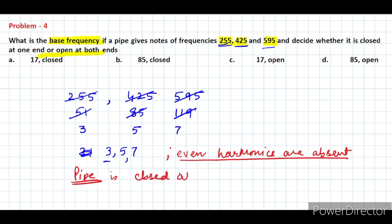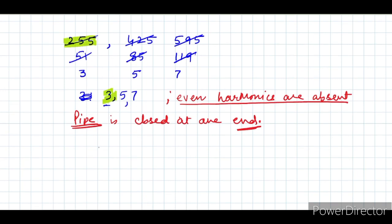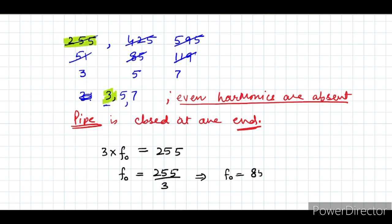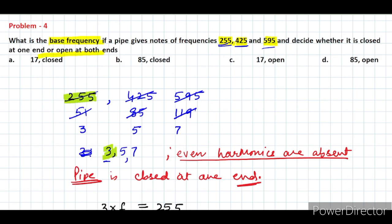Since only odd harmonics are present, the pipe is closed at one end. The third harmonic equals 3 times the fundamental frequency. So 3 × f₀ = 255, giving f₀ = 255 / 3 = 85 Hz. The fundamental frequency is 85 Hz and the pipe is closed at one end. The right option is B.